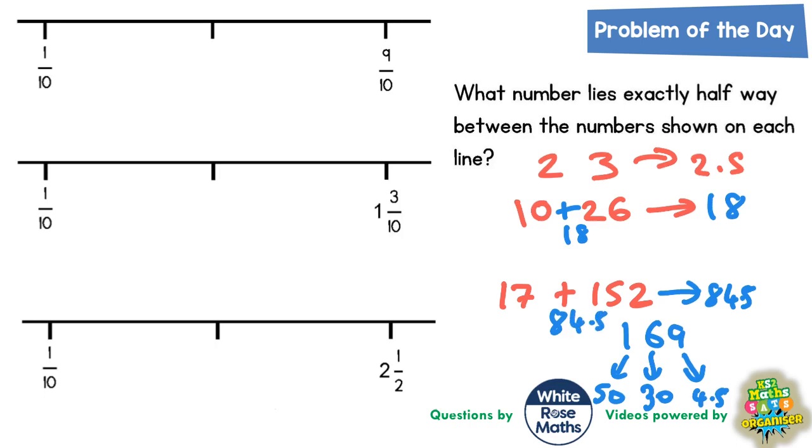Now we're going to use the same idea with the fractions on the number lines. So 1 tenth plus 9 tenths is 10 tenths. Now if you half that, half of 10 tenths is going to be 5 tenths. So 10 tenths divided by 2 is 5 tenths. That means halfway between 1 tenth and 9 tenths would be 5 tenths.